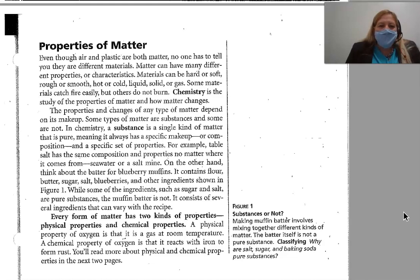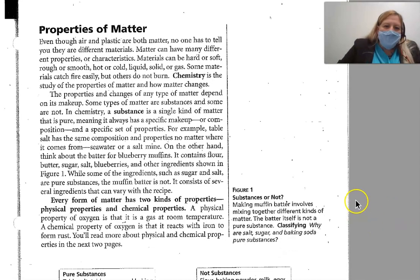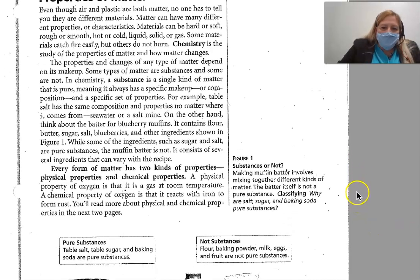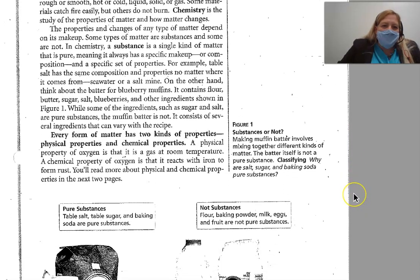Some types of matter are substances and some are not. In chemistry, a substance is a single kind of matter that is pure, meaning that it has a specific makeup or composition and a specific set of properties. For example, table salt has the same composition and properties no matter where it comes from — sea water or salt mine. On the other hand, think about the batter for blueberry muffins. It contains flour, butter, sugar, salt, blueberries, and other ingredients. Some of the ingredients such as sugar and salt are pure substances, but the muffin batter is not — it consists of several ingredients that can vary with every recipe.